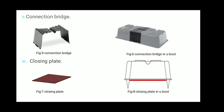The second part is the connection bridge. The connection bridge is used to connect two different U-Boots so they become rigid. The third part is the closing plate, which is basically used below the surface of the U-Boot.